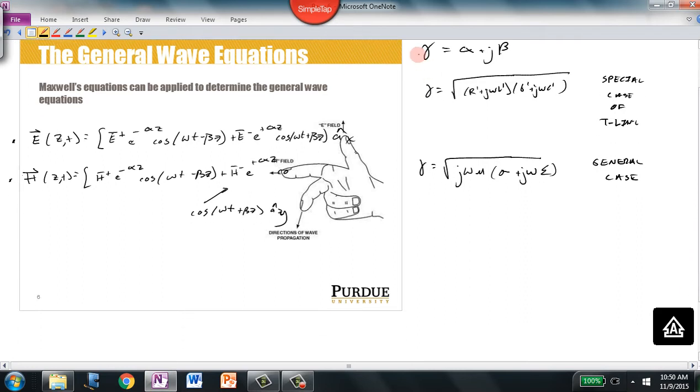There was a second parameter that we used to characterize T-lines, and we called that Z0, the characteristic impedance. That was equal to r prime plus j omega l prime over g prime plus j omega c prime. We said that the characteristic impedance equals the ratio of v bar plus to i bar plus, the forward traveling voltage component to the forward traveling current component. That's also equal to the opposite of the reverse traveling voltage component to the reverse traveling current component. This was a special case of the T-line.